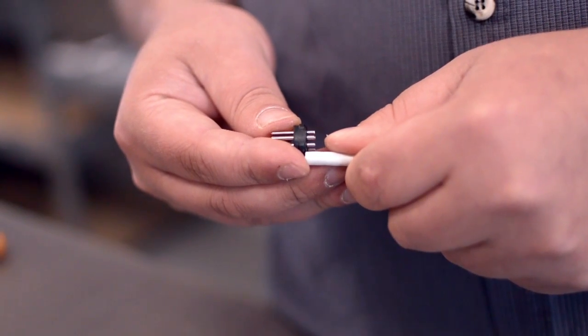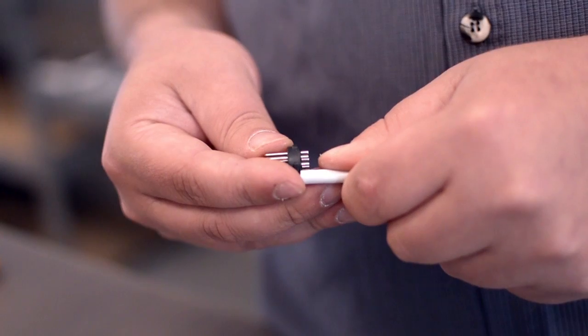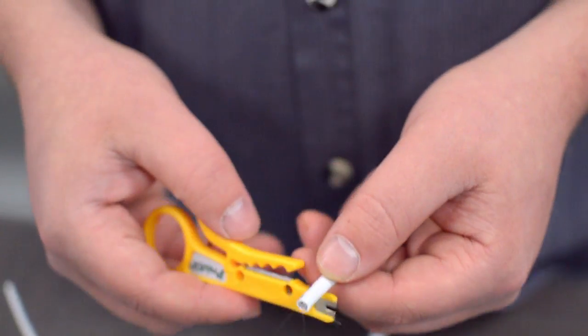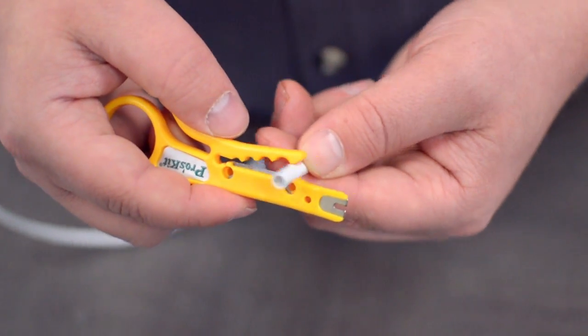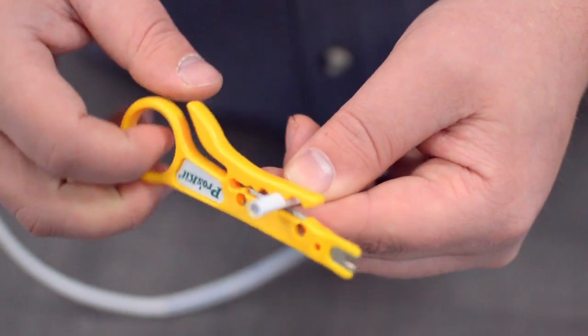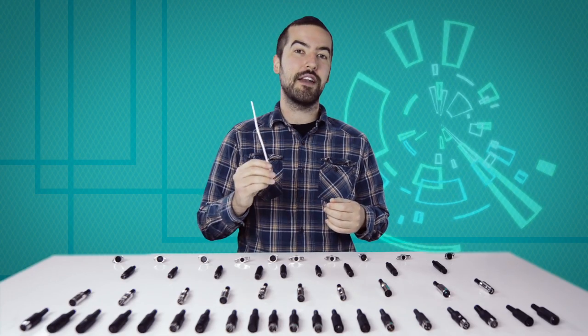Measure how far you will need to strip back the jacket by holding the cable up against the base of the connector. Then strip the cable jacket using the wire strippers. For this example, we will be using CAT 5E cable.